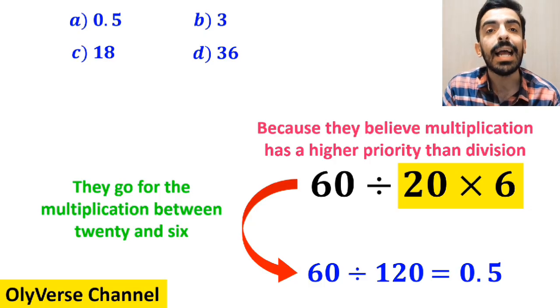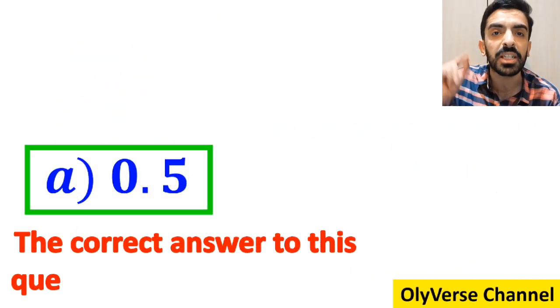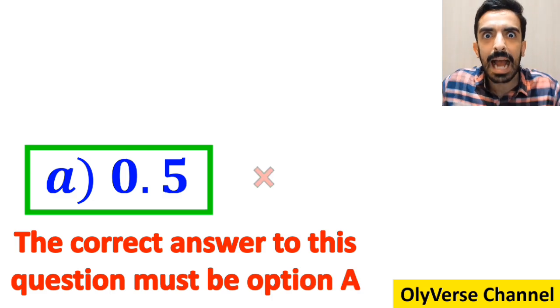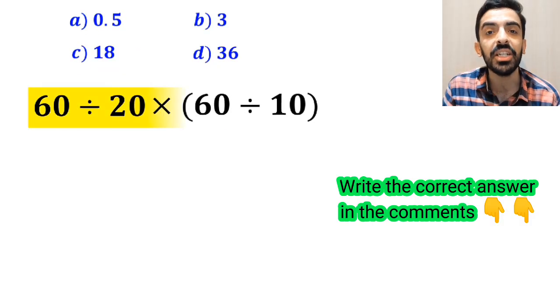Then without any hesitation, they conclude that the correct answer to this question must be option A. However, this answer is absolutely wrong. Now let's go through this question step by step and solve it together.